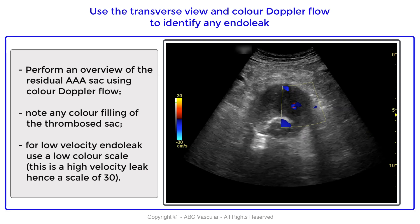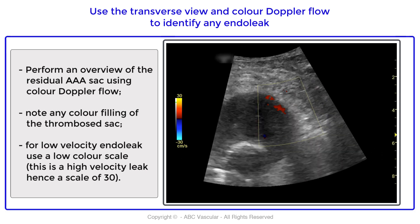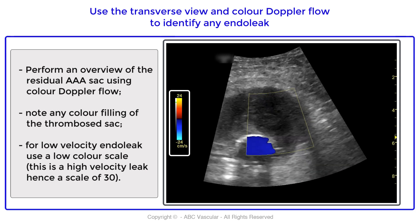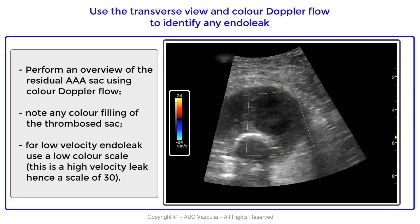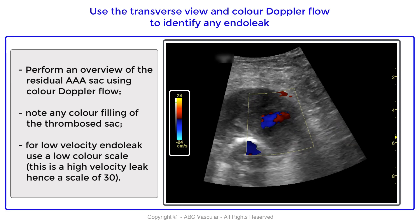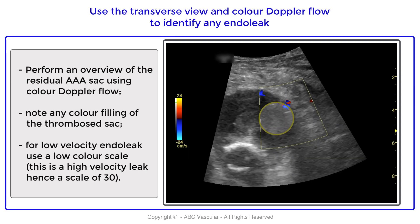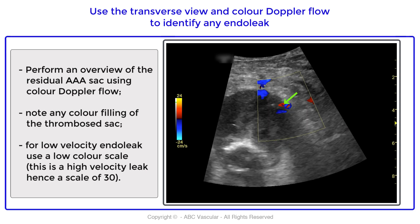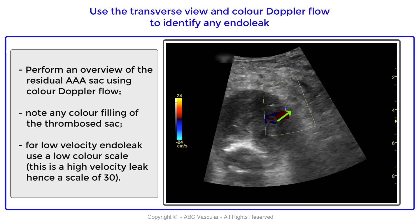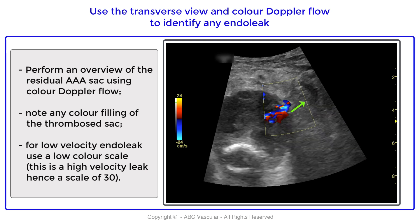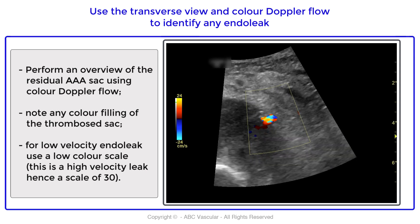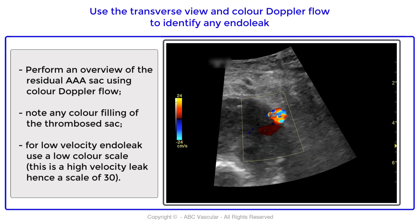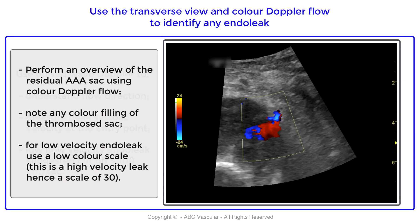This flow is pulsatile, observed with 4x zoom over the region of interest. Reducing the scale provides better definition of the color flow filling, and we can clearly see an entry point at the level of the lateral wall of the abdominal aortic aneurysm. This is therefore considered to be a type 2 endoleak, based on the level of entrance of the flow within the aneurysmal sac.